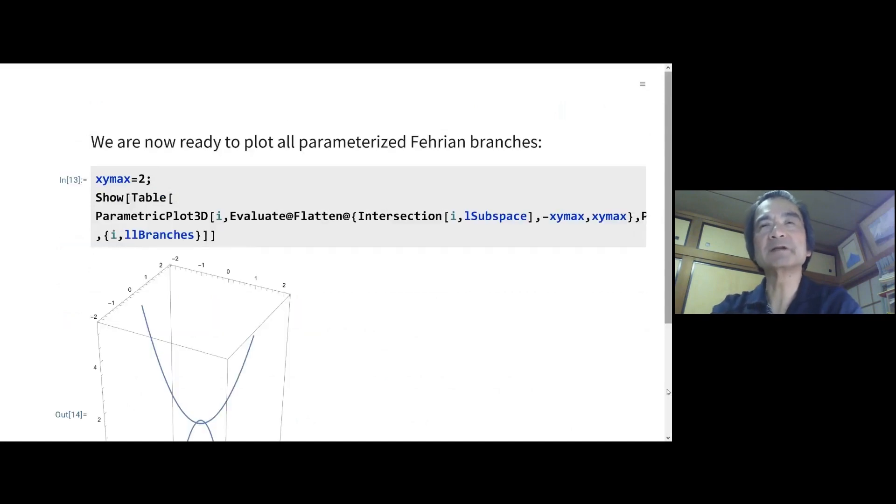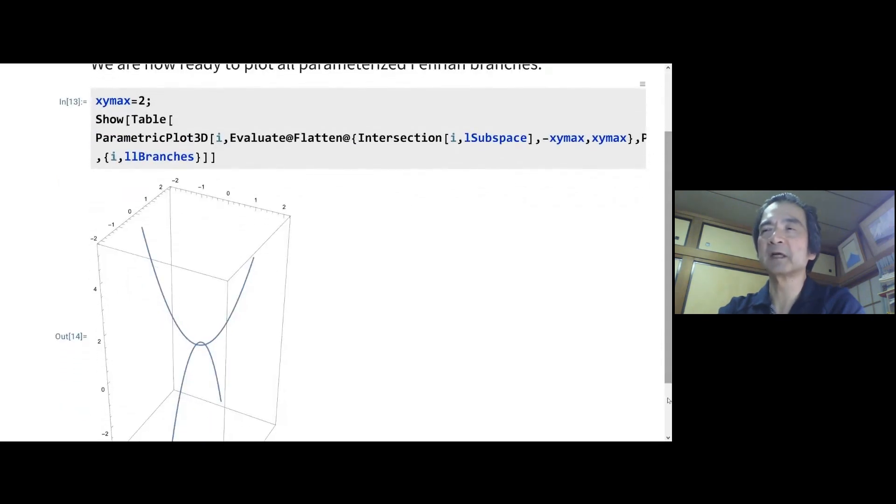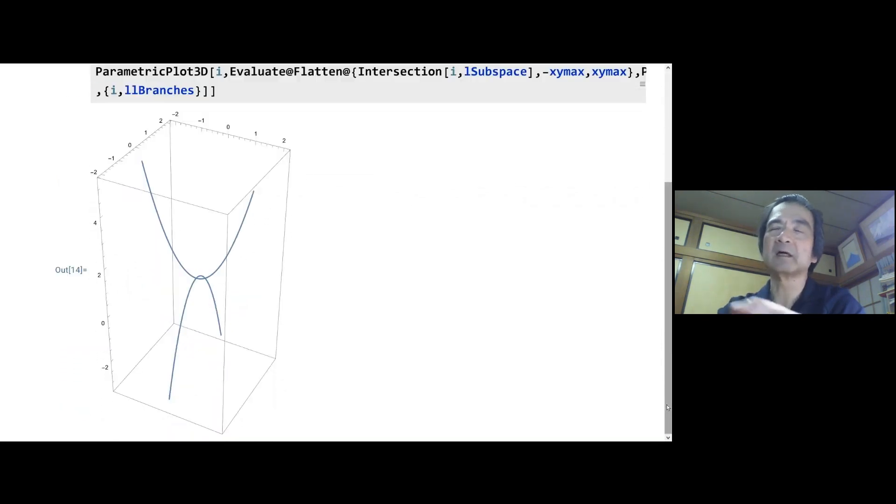Now we're ready to plot all branches. They are parameterized Fehrian branches like this. Using a normal parametric plot 3D function to see, in this case, two parabolas like this form.